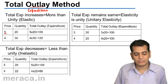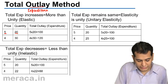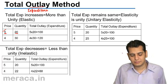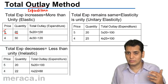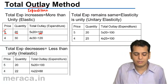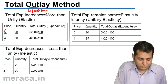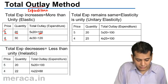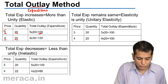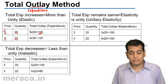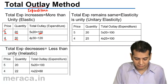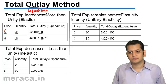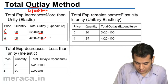Here, the price initially is ₹5 and the quantity consumed at this price is 20, so total outlay or total expenditure is 100. Now if the price reduces to ₹4, the quantity of consumption increases to 30, and if I find my total outlay it will be 4 × 30 = 120.